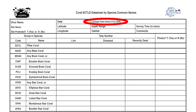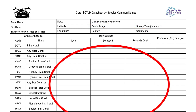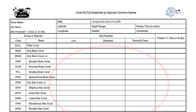If GPS is not available, approximate the coordinates later on at AGRA's website or by using Google Earth. You can also identify markers on shore. Record the following data during the survey: the depth range, habitat type, survey time in minutes, and a tally of each of the stony corals most susceptible to stony coral tissue loss disease as encountered. Tally by species and whether the coral is live, diseased, or recently dead. Also record if any pictures of the corals have been taken.